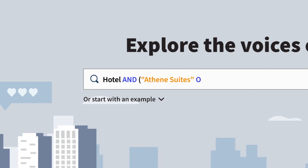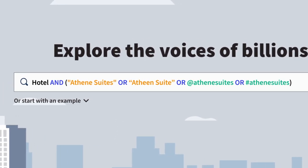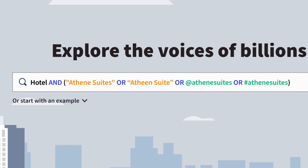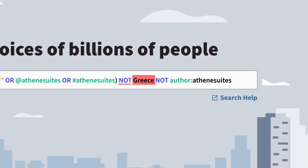Let's further refine and expand on these results by adding more search terms and operators. The operator OR searches for any term within the brackets. Include commonly misspelled variations of your brand name, as well as your social media handle and branded hashtags, to capture all relevant results. The operator NOT excludes irrelevant mentions related to your brand name, and NOT author excludes mentions published from your brand's social media accounts.